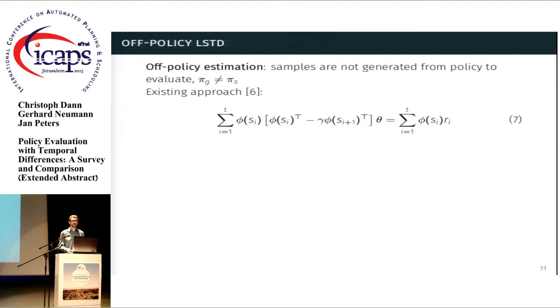And this works really well as long as the policy that we want to evaluate is the same as the one that generated the samples that we've seen. However, in off-policy estimation, those are different. So this approach doesn't work directly anymore. But it's easy to fix by, for example, taking the approach proposed by Yu, which uses importance weights to account for the different distribution in the action choices.